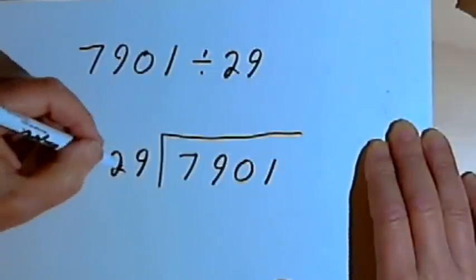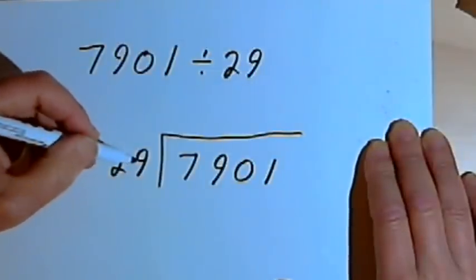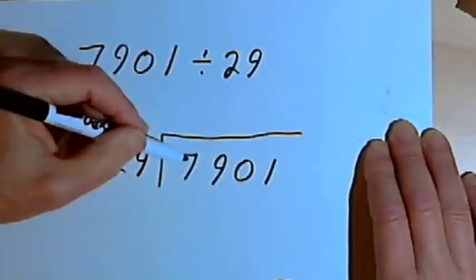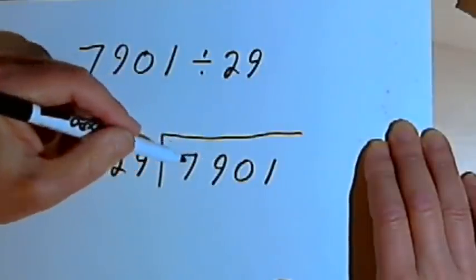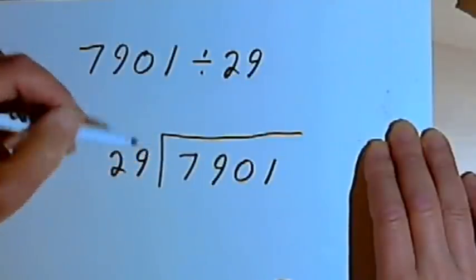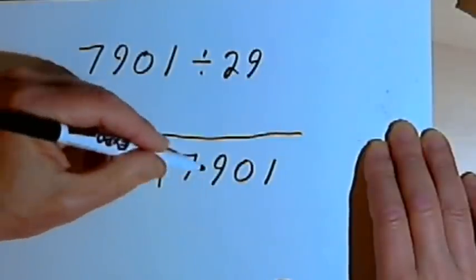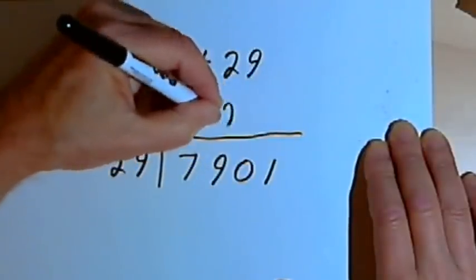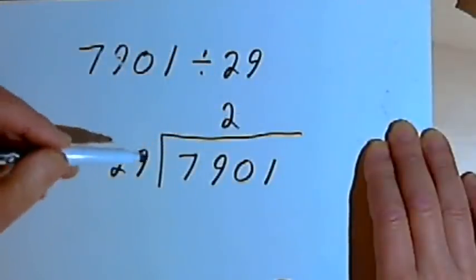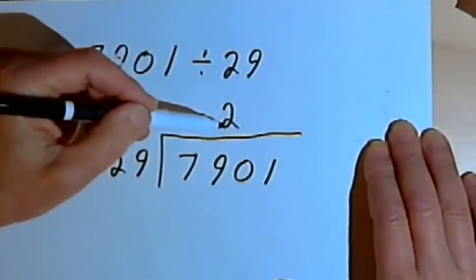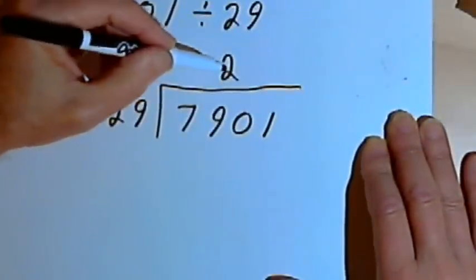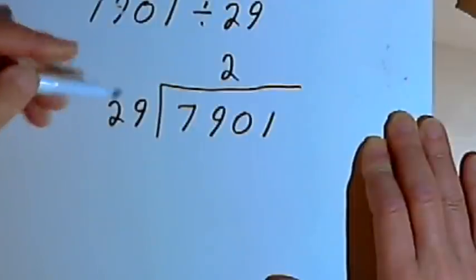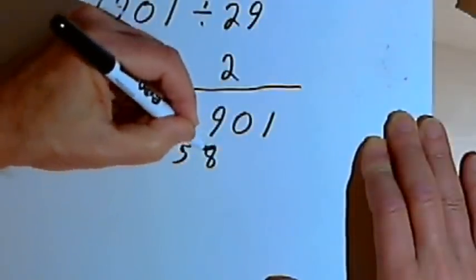And what I'm going to do is I'm going to kind of mentally think of that 29 as 30. And I know that 30 could go into, well, 2 times 30 is 60, and 3 times 30 is 90. So probably 29 is going to go into 79 just two times. So I'll write a 2 above the 9 of the 79. And then I'm ready to multiply. So I'm going to multiply 2 times my divisor. 2 times 29 is 58.